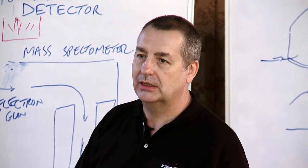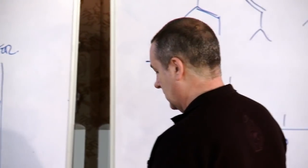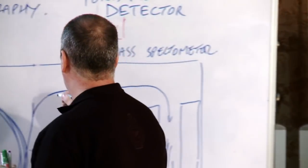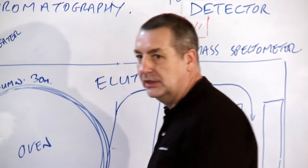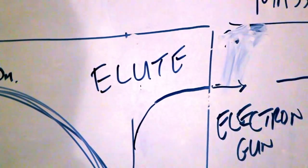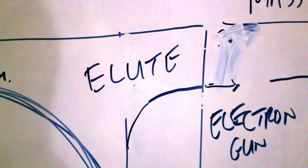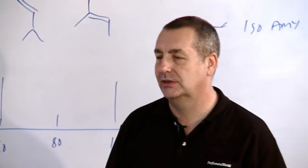How do you spell eluent? To elute. Eluent.